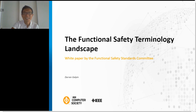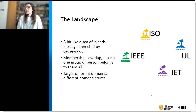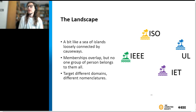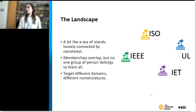Thank you for the introduction. When we set up the committee and started talking, it was quite obvious that there is a functional safety landscape out there, but it's kind of like a sea of islands mostly connected by causeways. You've got different groups like ISO, IEEE, UL, IET, and others. Although memberships overlap, no one person or group really belongs to them all, and they quite often target different domains with different nomenclatures. It means when we're talking to each other, it can sound as if we understand each other but quite often we don't, and there are small inconsistencies and misunderstandings that arise as a result.